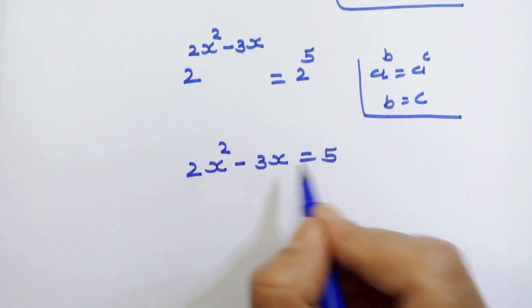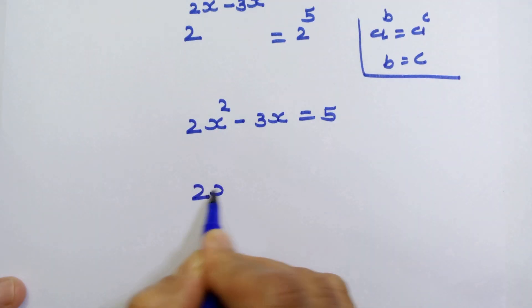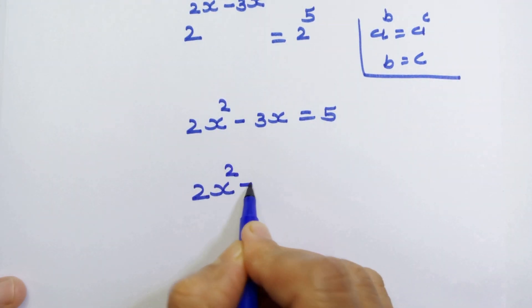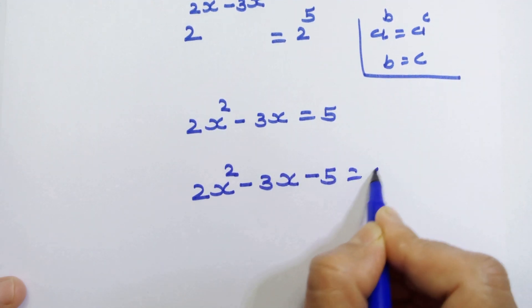Let's move this 5 on left hand side. So we have 2x square minus 3x minus 5 is equal to 0.